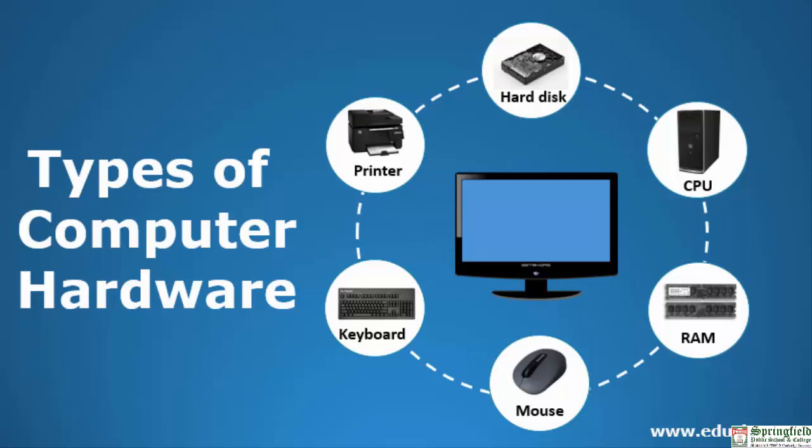Hardware components of the computer systems are classified into input devices, system unit, storage devices, output devices, and memory. Input devices include the keyboard, mouse, microphone, scanner, barcode reader, digital camera, and touch screen. I'm going to explain these devices.